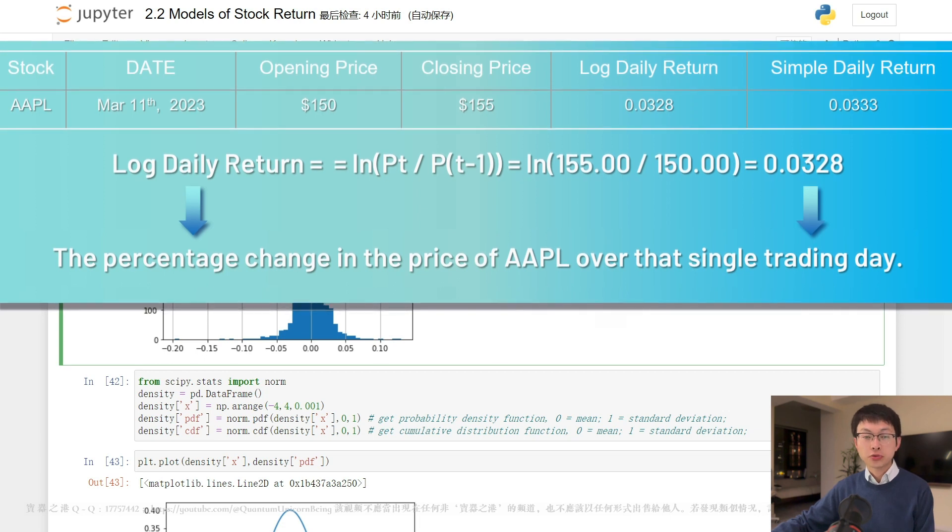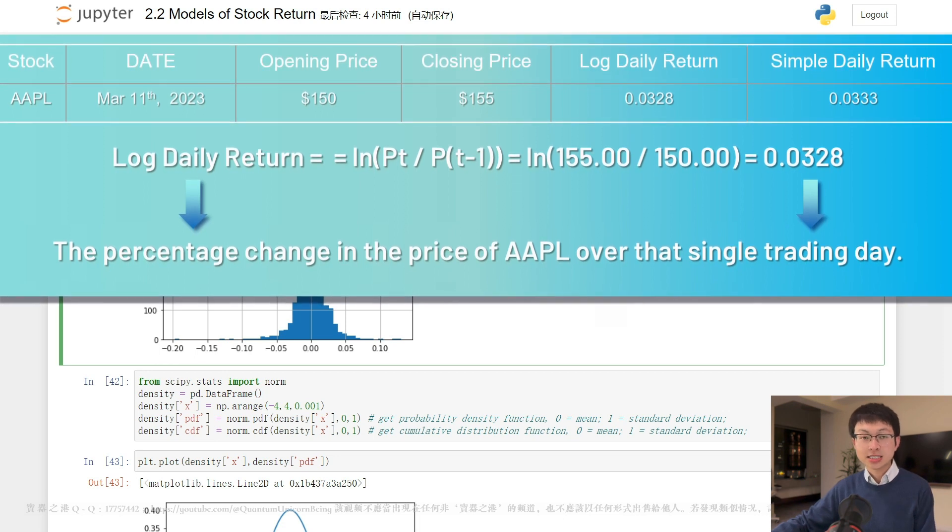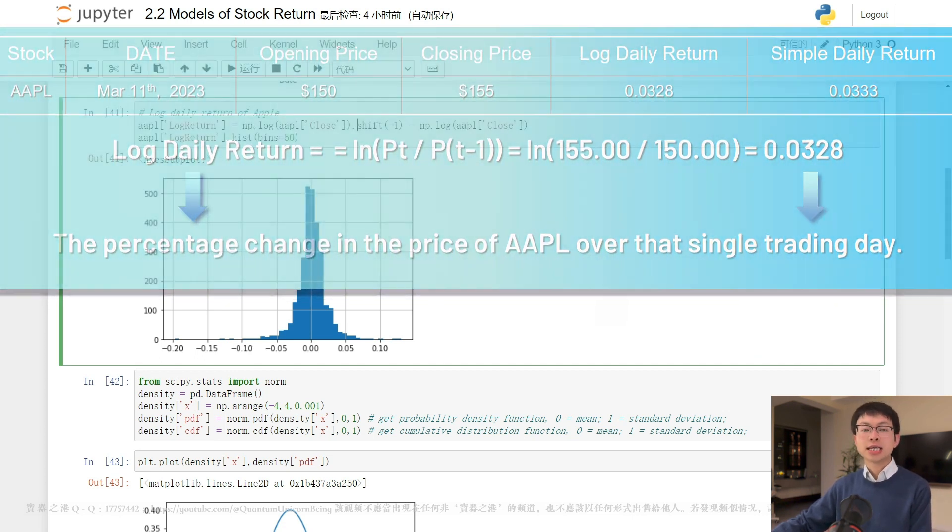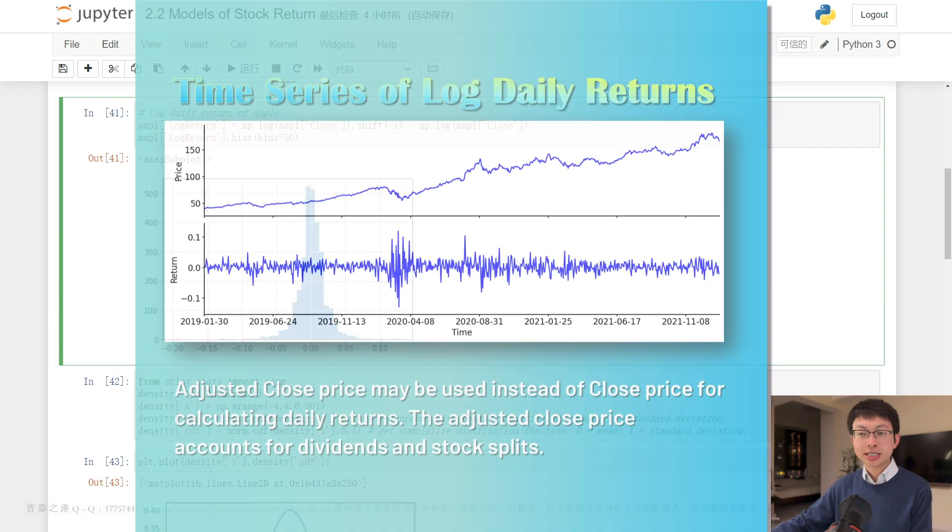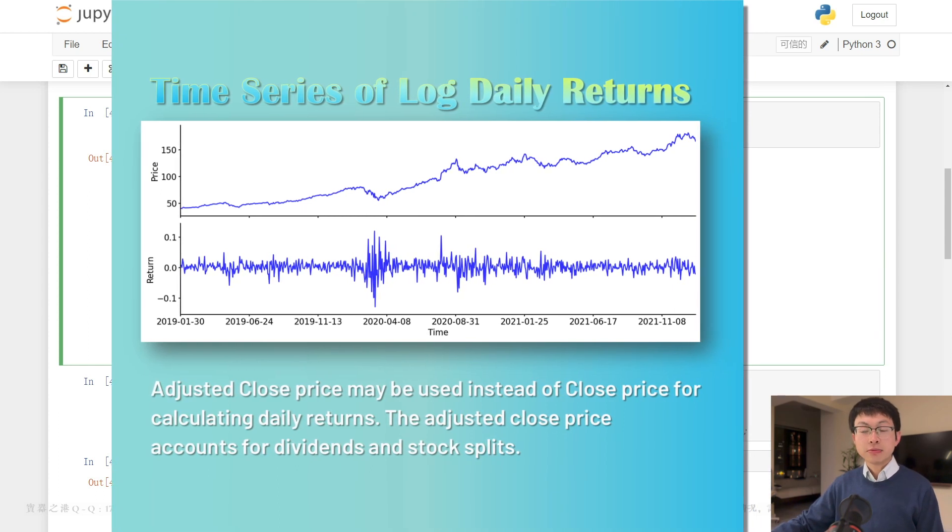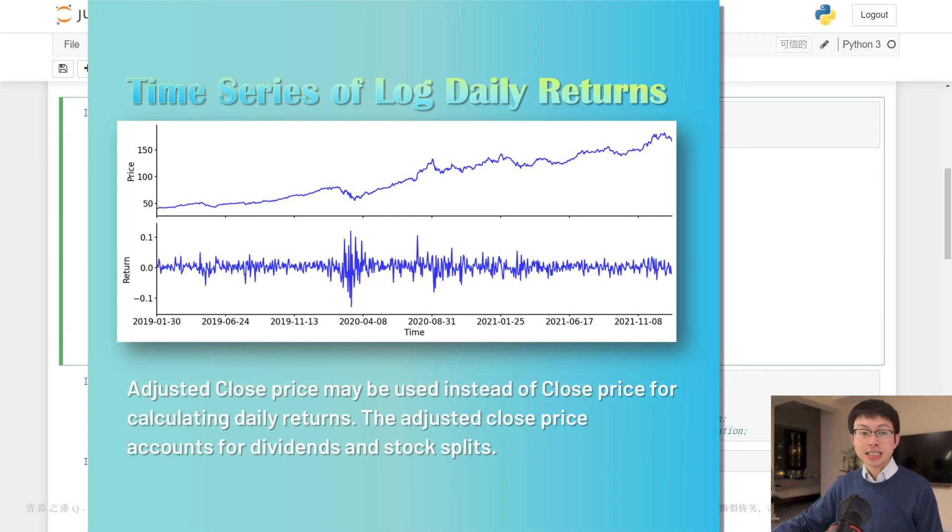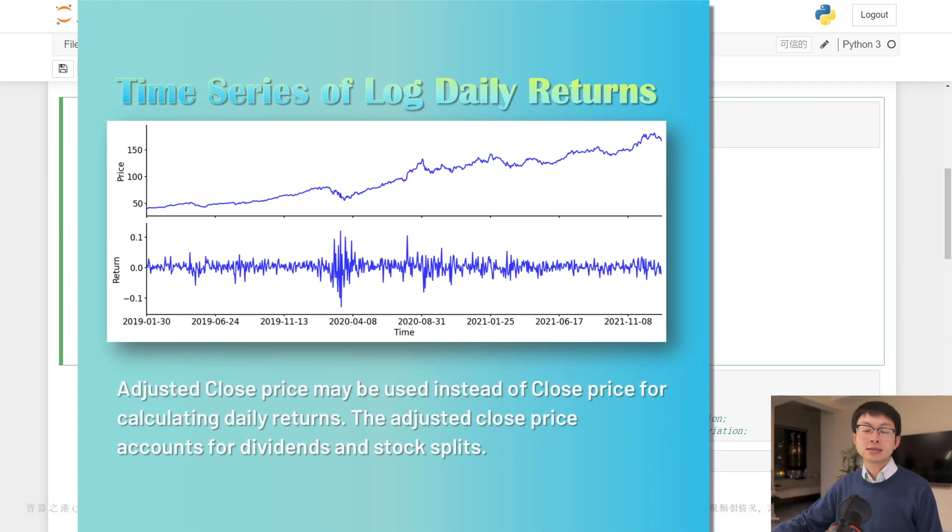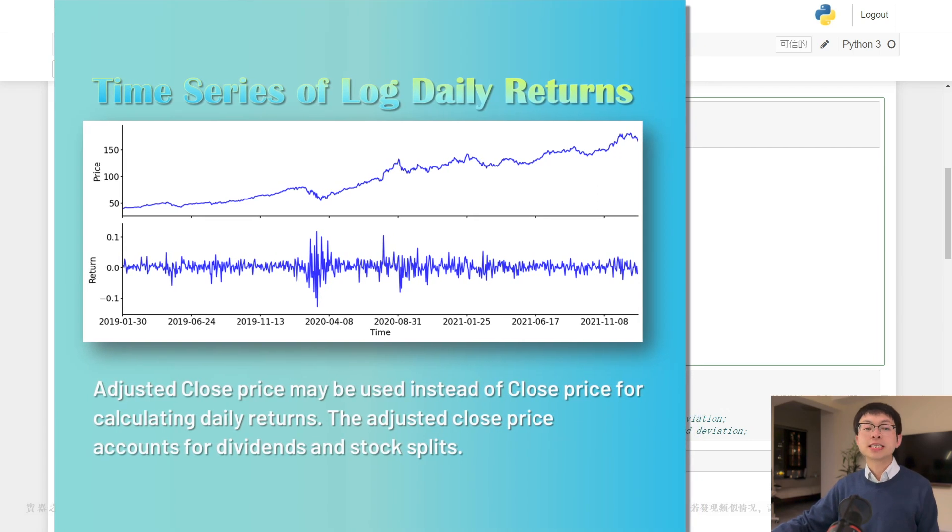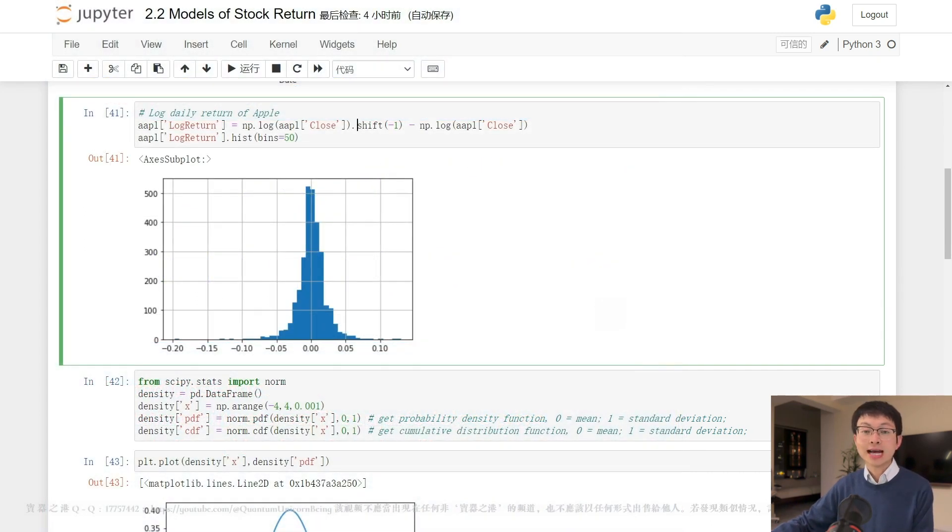And it was 3.28%. We can interpret this as a percentage change in the price of Apple over the single trading day. We can repeat this process for each trading day in the historic data of Apple to obtain a time series of log daily returns. This time series can be used to calculate various statistics, such as the average daily return, the volatility, the correlation with other assets. These statistics are useful for investors to make informed decisions about investing in Apple or constructing diversified portfolios that include Apple.